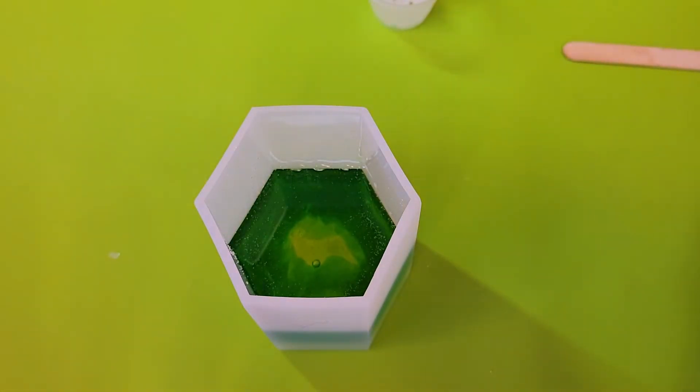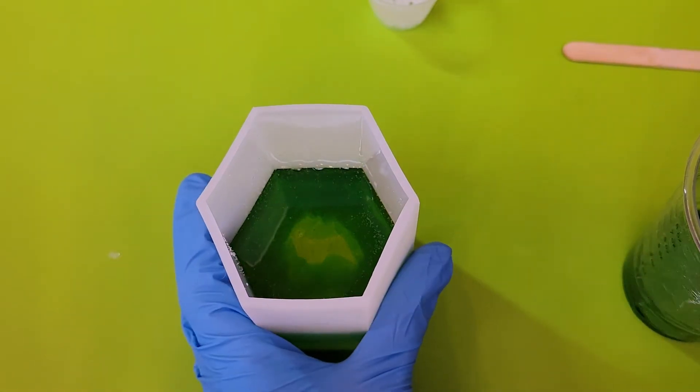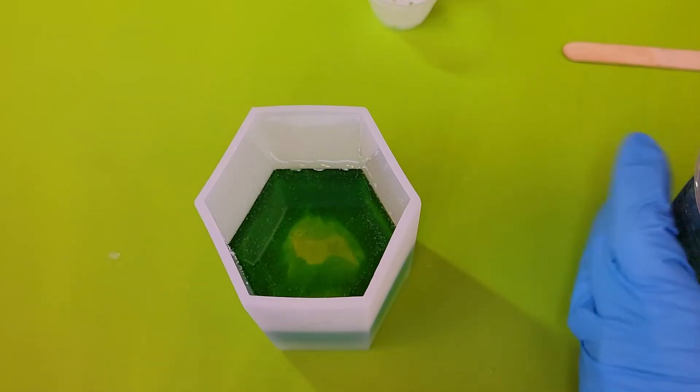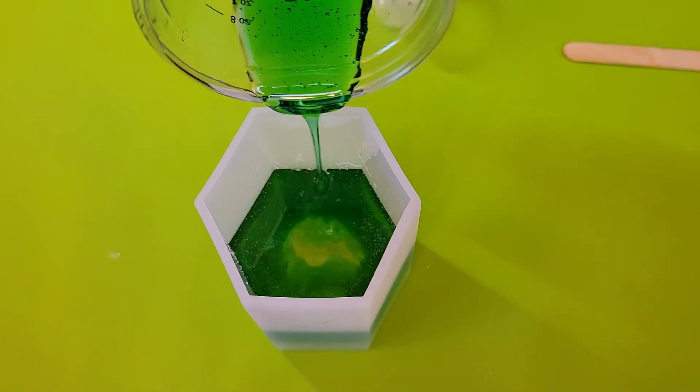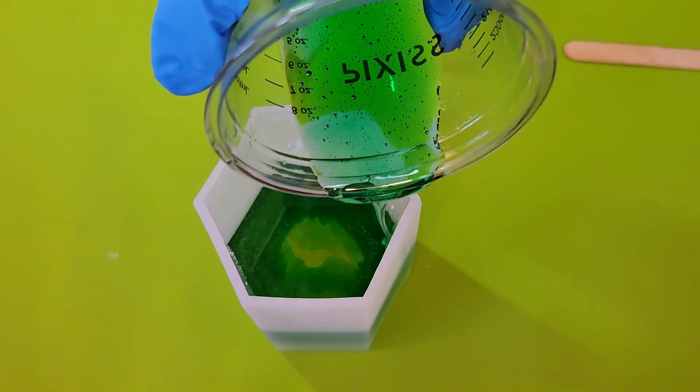My resin is already starting to thicken. The mold is not heating up though, so that's good. Doing a deep pour, it can get really hot. So I'm going to do this one around the edges as well, if my handle stops shaking.